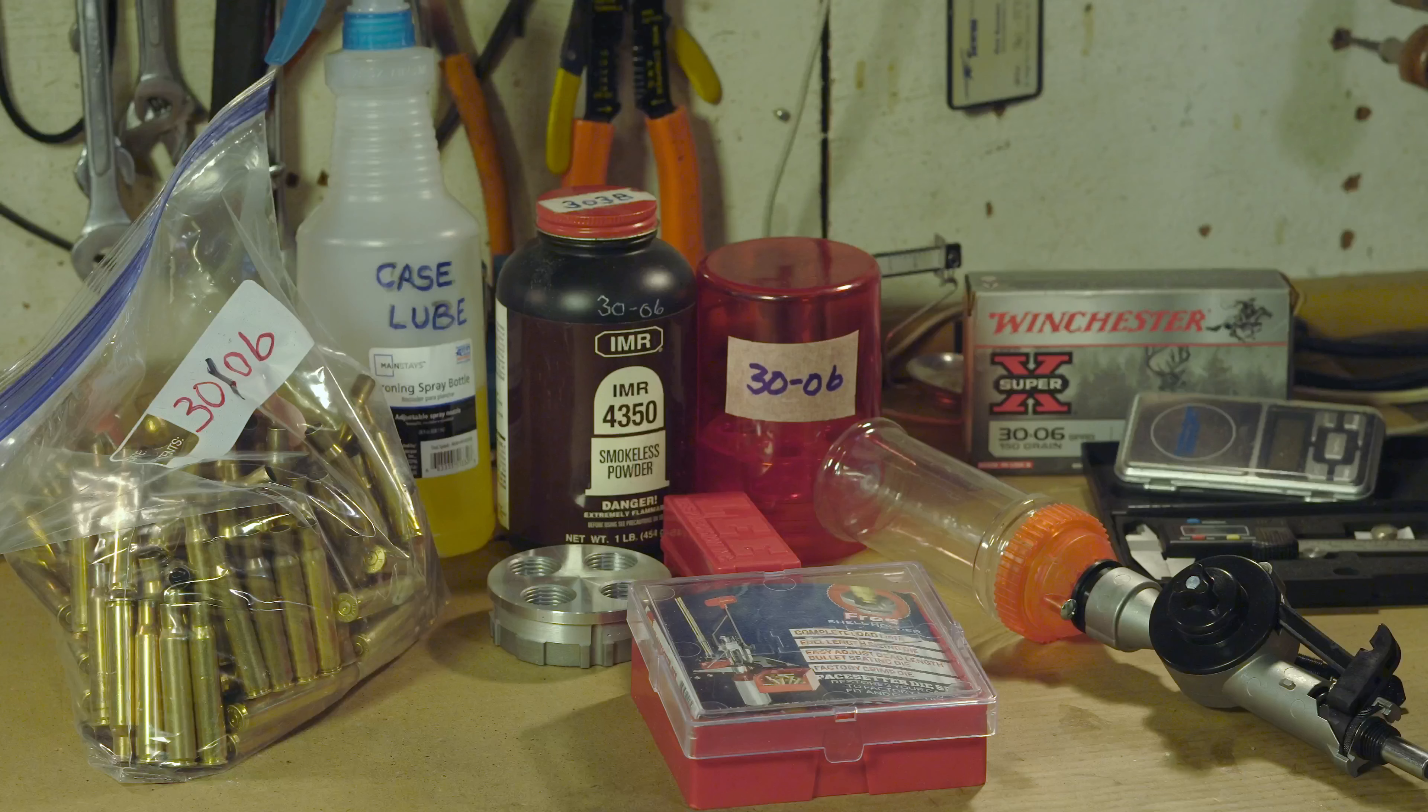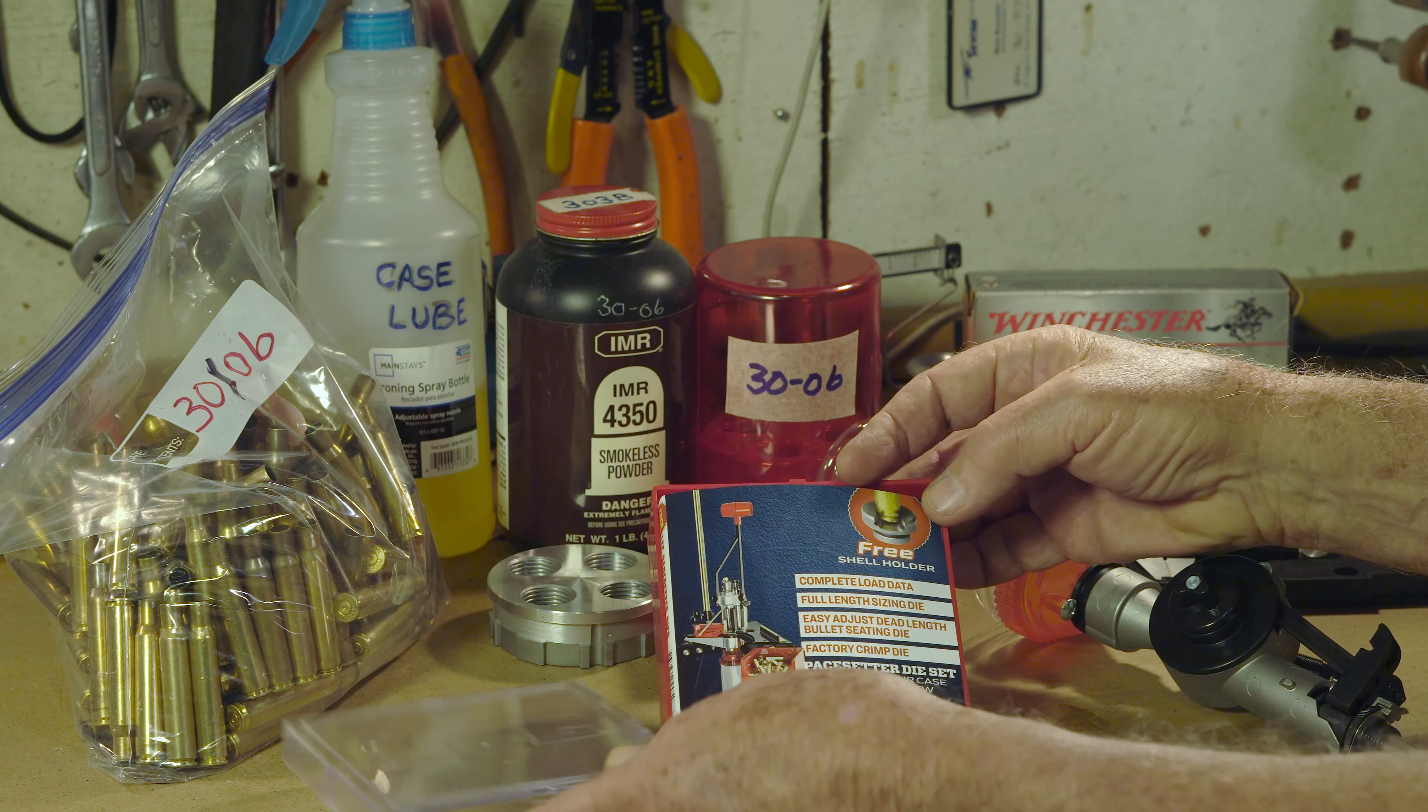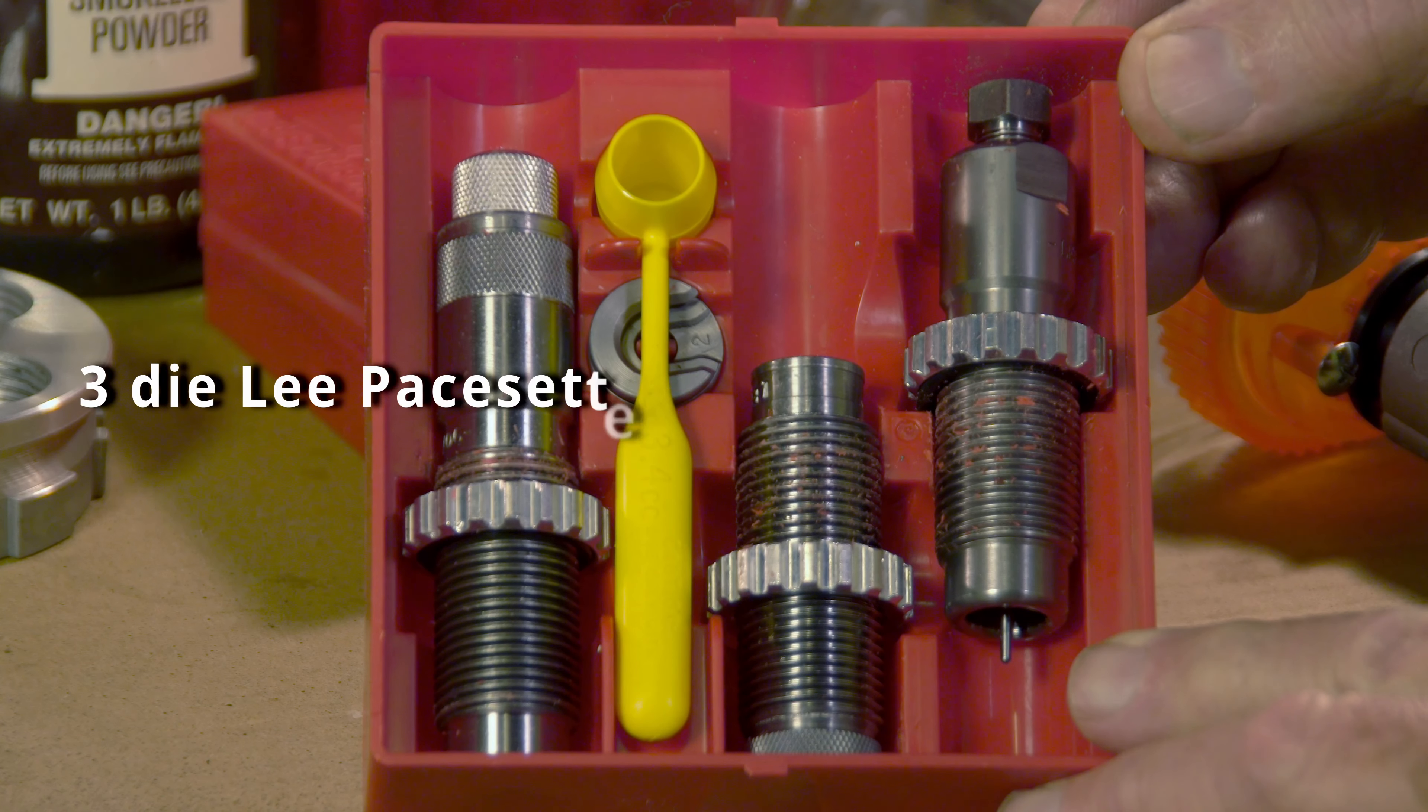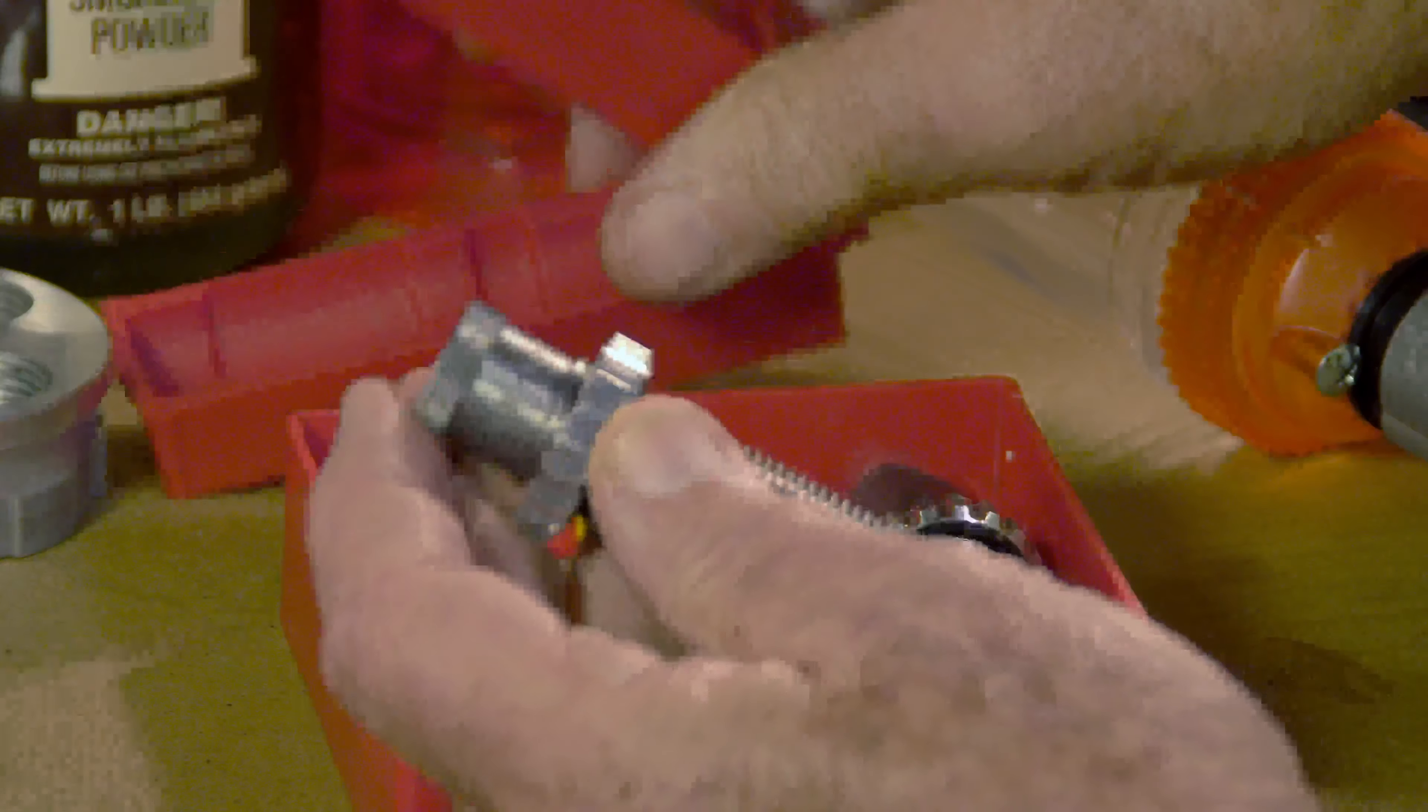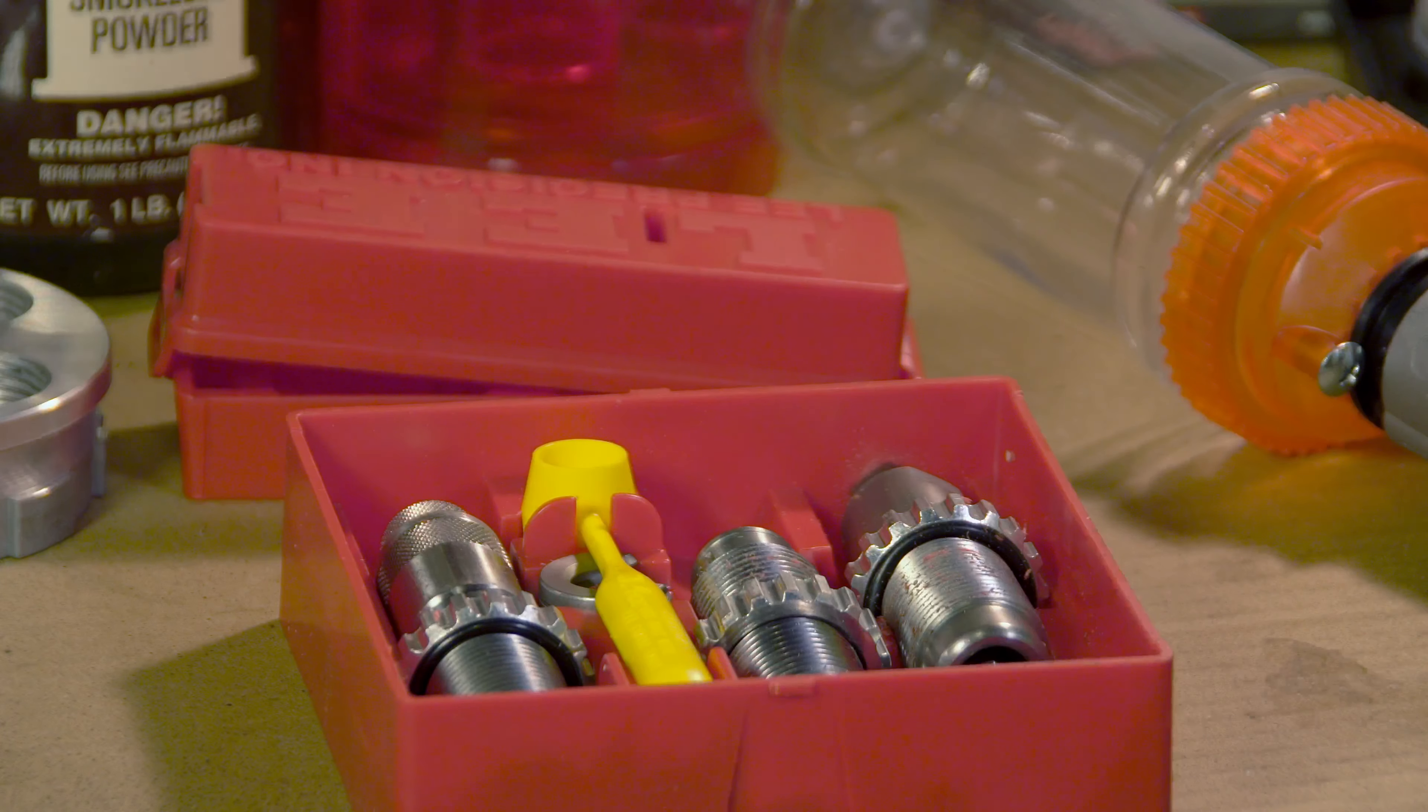I did a quick cost assessment. Here's what it would cost to reload if you already had a press. You'll need the Lee .30-06 die set. I recommend the 3-die pacesetter set. That's what we're using. Unless you want a neck sizer die, then you need the 4-die premium set. And you'll need a long charging die extension if you're using a Lee Autodrum powder measure. Make sure the actuator drop tube is inside.